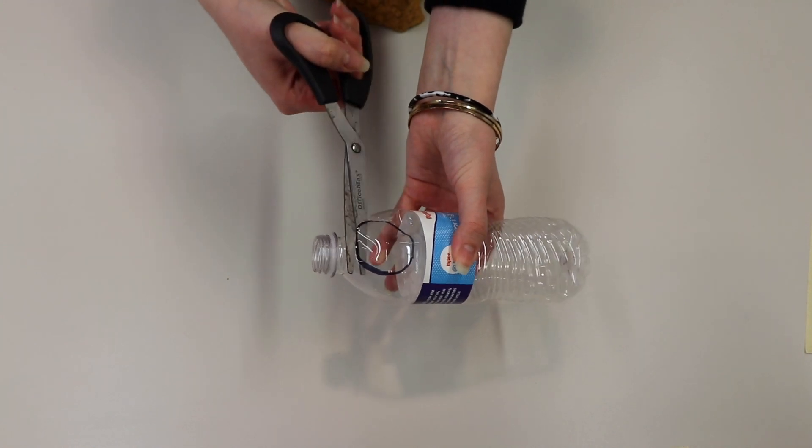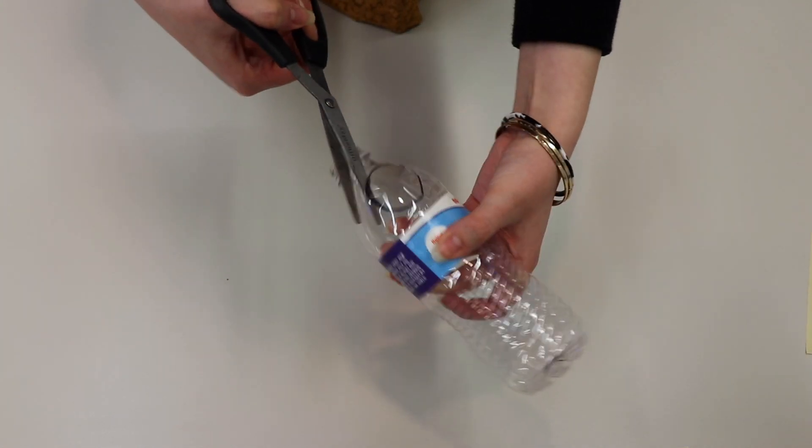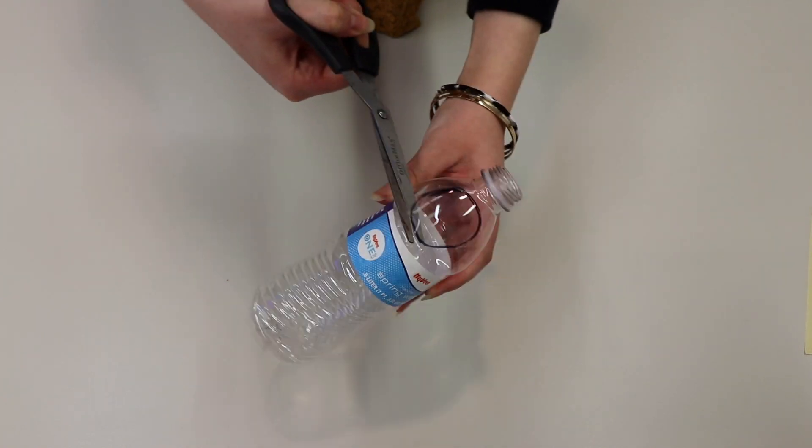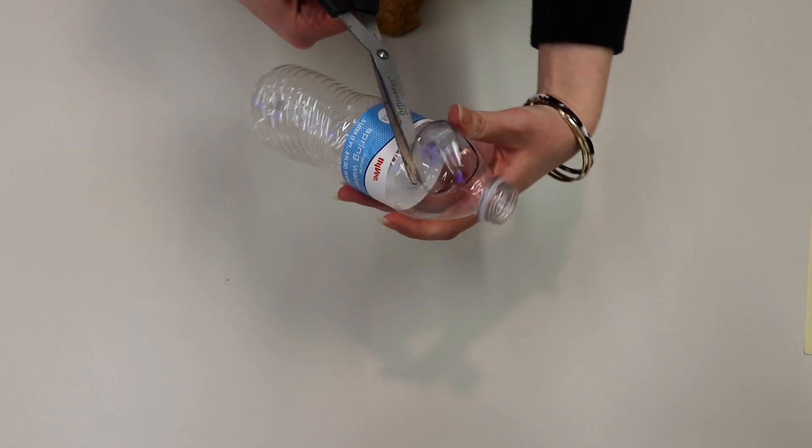Then we will just cut the circle out of the water bottle and this will be our magnifying glass.